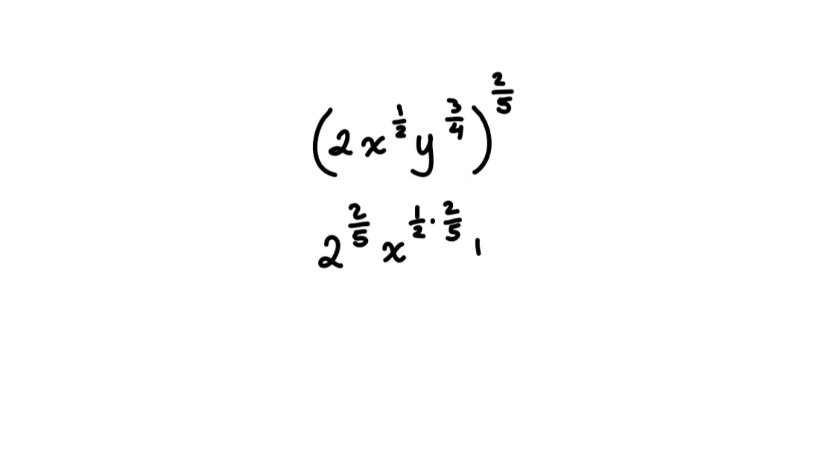We can convert the exponential form of the coefficient into a radical form. So then it looks like this: 5th root of 2 squared. Then we'll keep the exponential form of the bases for now. So then we'll get 2s reduced.